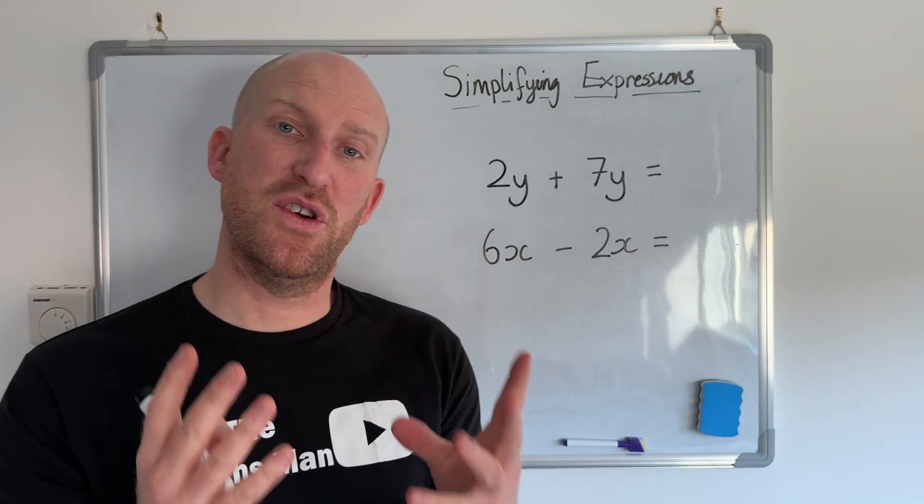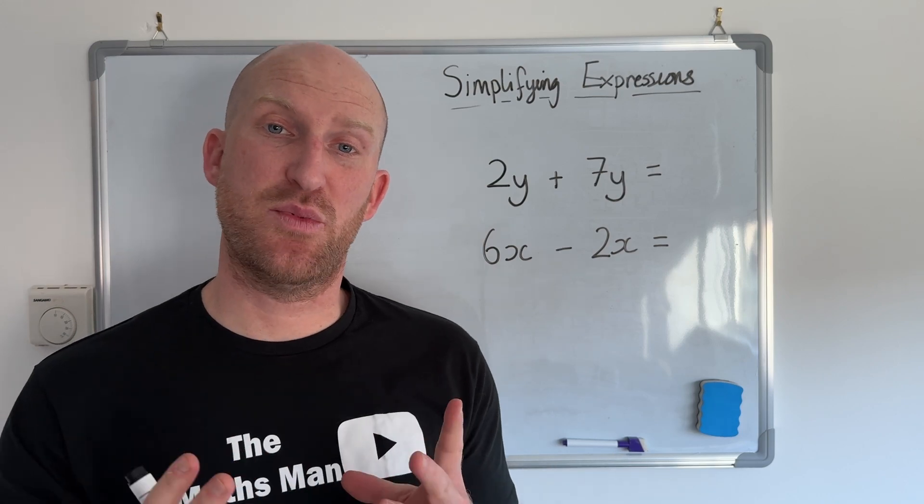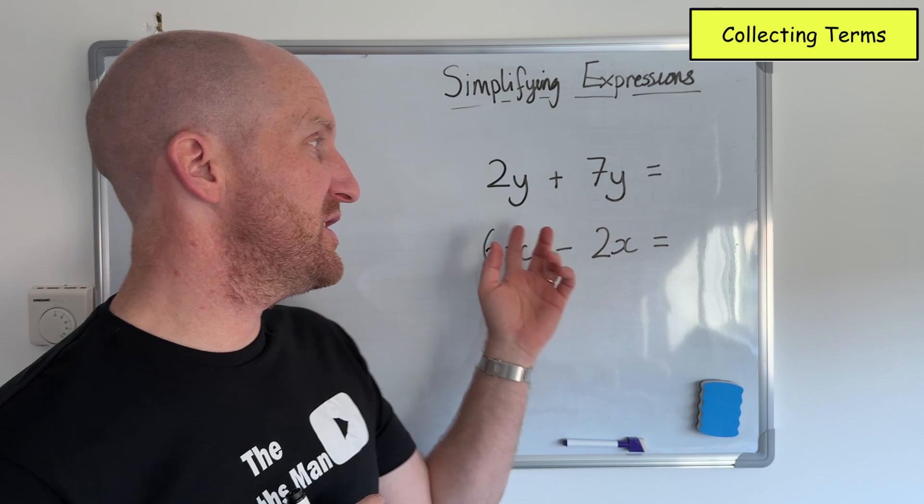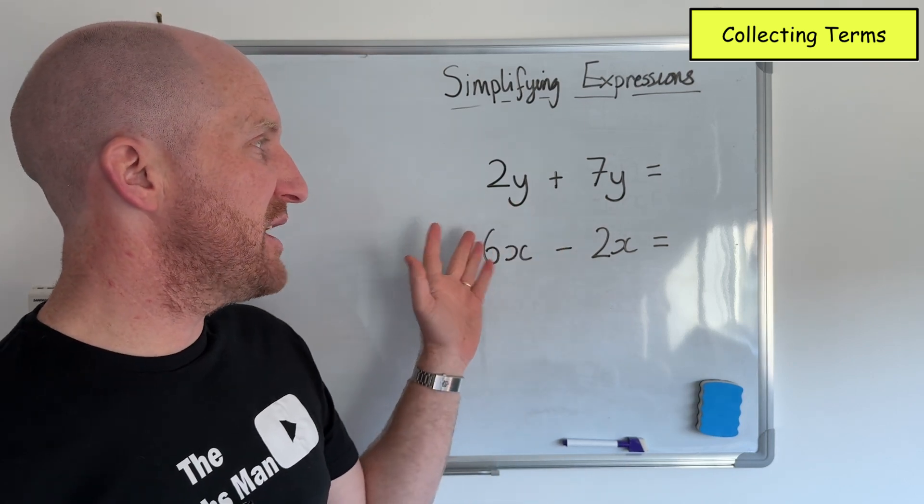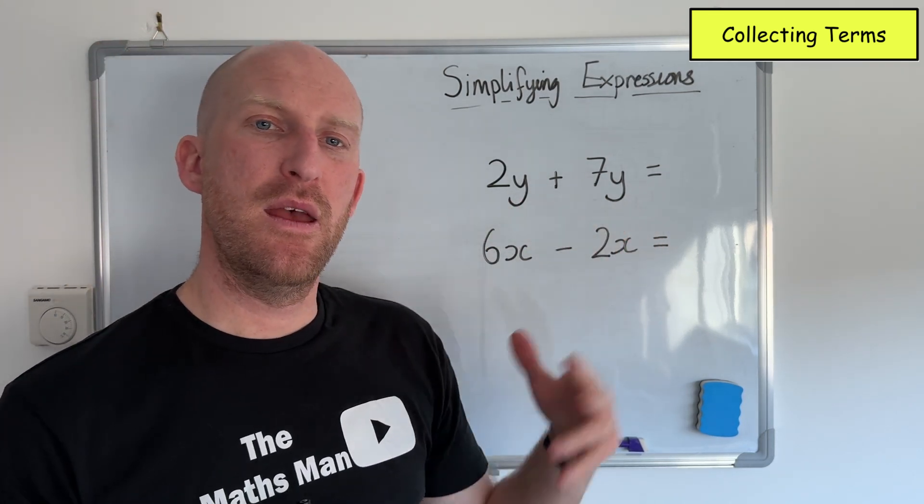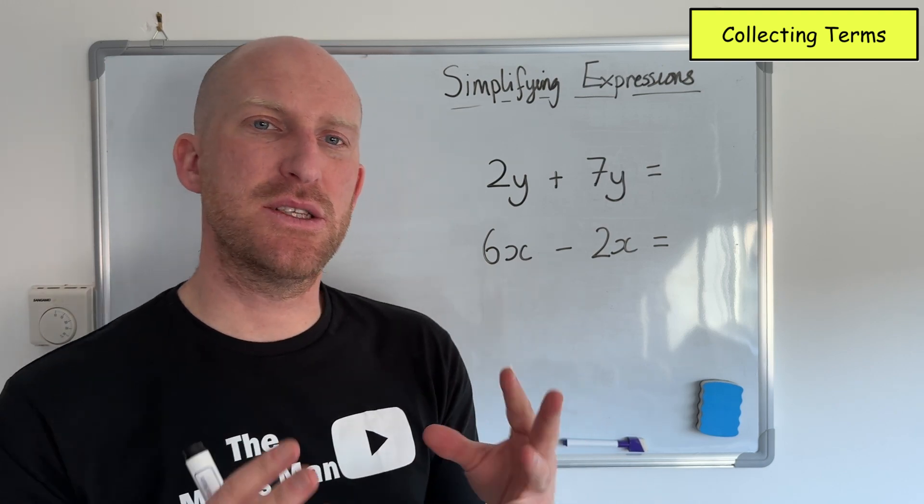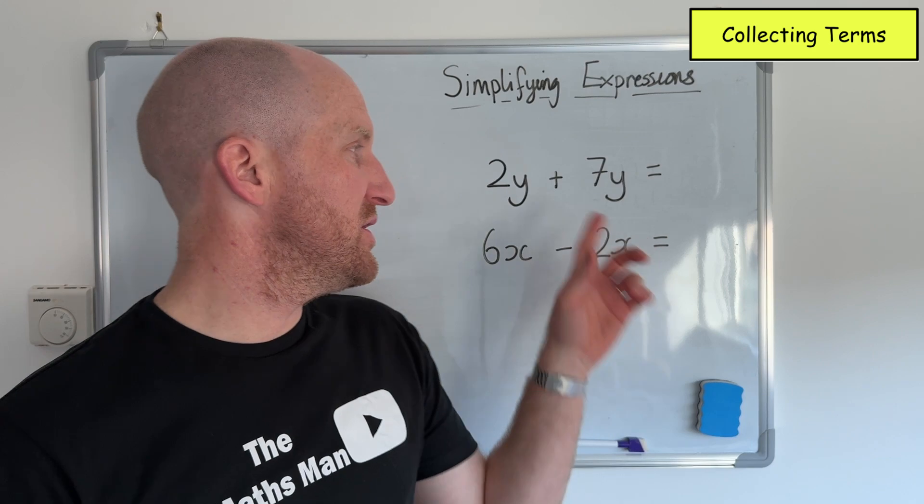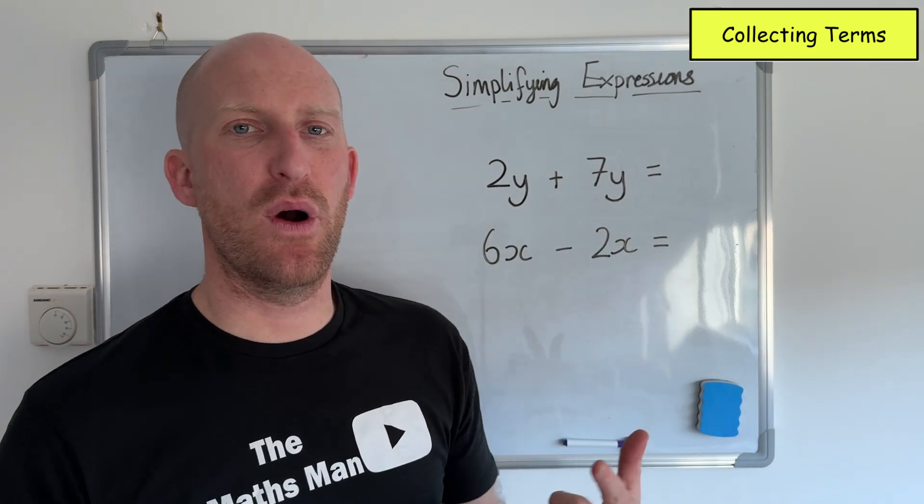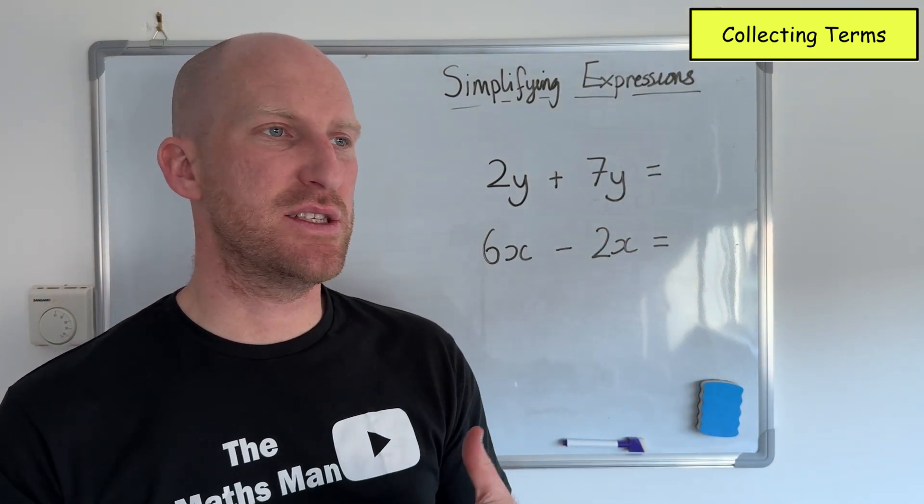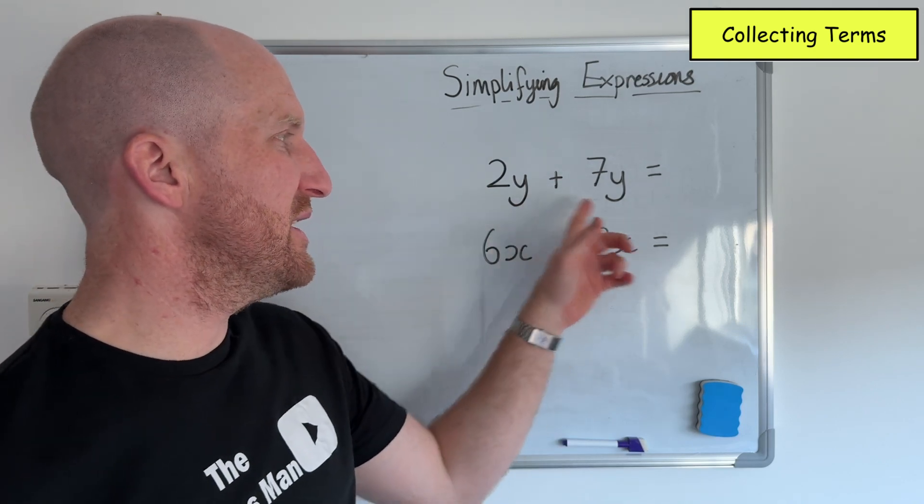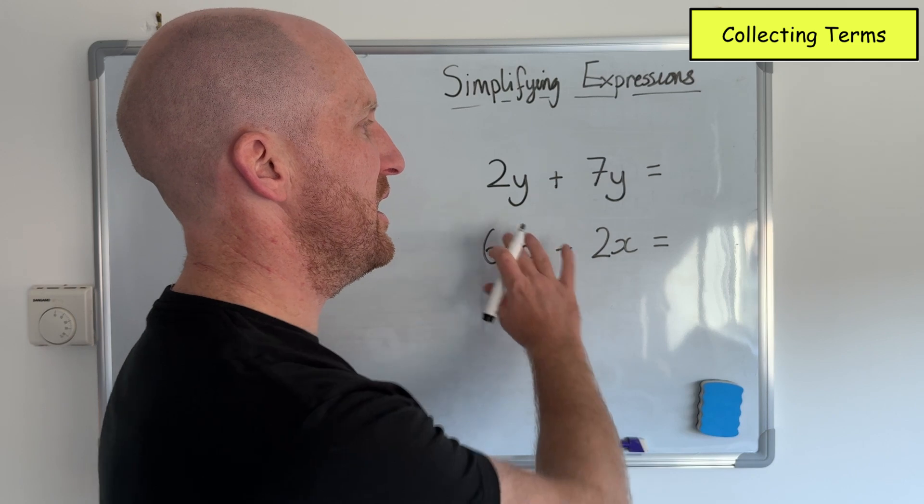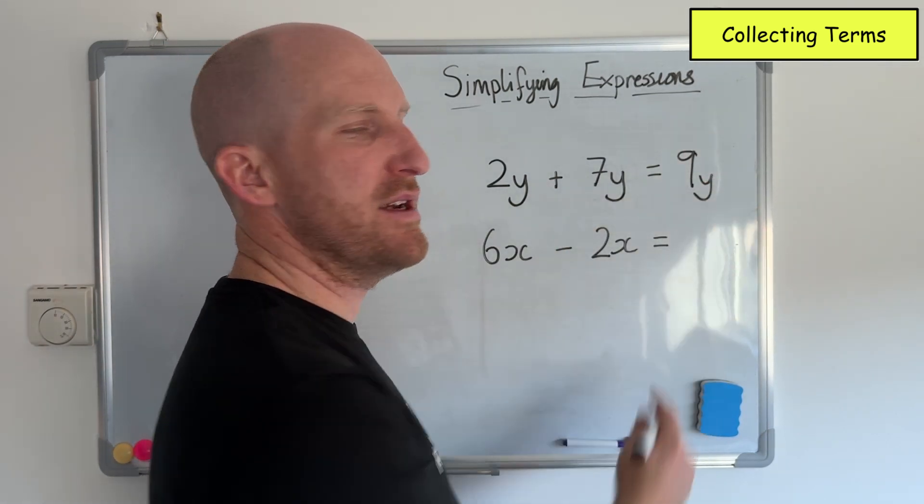So the first rule and the first part of being able to simplify algebraic expressions is knowing how to collect like terms. So as you can see here in my two examples I've got 2y plus 7y. Now the whole point in collecting terms in algebra is to make things more simple. So here 2y plus 7y, I don't need to have that. It's far too long. So instead what I'm going to do is I'm going to bring the 2y and the 7y together and I'm going to express that as 9y instead.